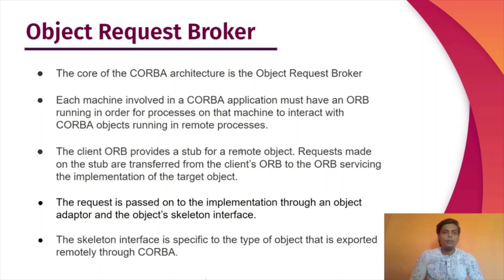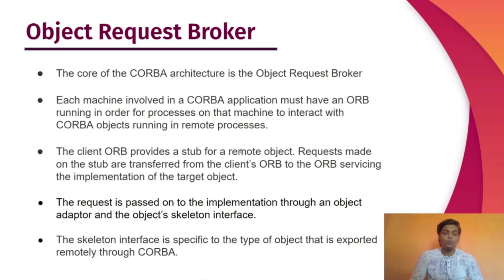The next term is ORB, the Object Request Broker. The core of the CORBA architecture is the Object Request Broker. Each machine involved in a CORBA application must have an ORB running in order for processes on that machine to interact with CORBA objects in remote processes. The client ORB provides a stub for a remote object. Requests made on the stub are transferred from the client's ORB to the ORB servicing the implementation of the target object. The request is passed to the implementation through an object adapter and the object's skeleton interface, which is specific to the type of object exported remotely through CORBA.